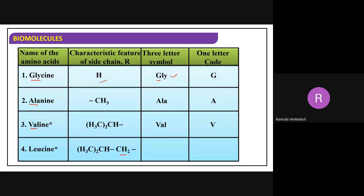Leucine has the R group CH2-CH(CH3)2. Take the symbol LEU for the first three letters, and the code will be L. So we have completed four amino acids: glycine, alanine, valine, and leucine.